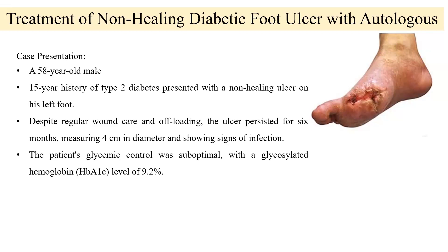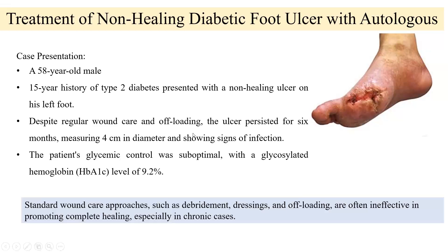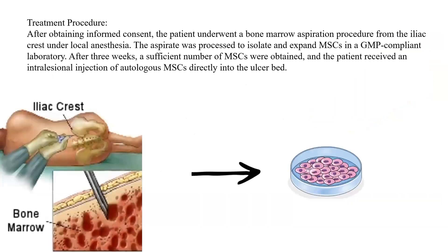The standard approach was to remove debris and do dressings. In stem cell therapy, ethics is involved. After obtaining informed consent, bone marrow aspiration procedures were done from the iliac crest. They isolated the stem cells, grew them, and the patient was injected with mesenchymal stem cells into the ulcer bed.